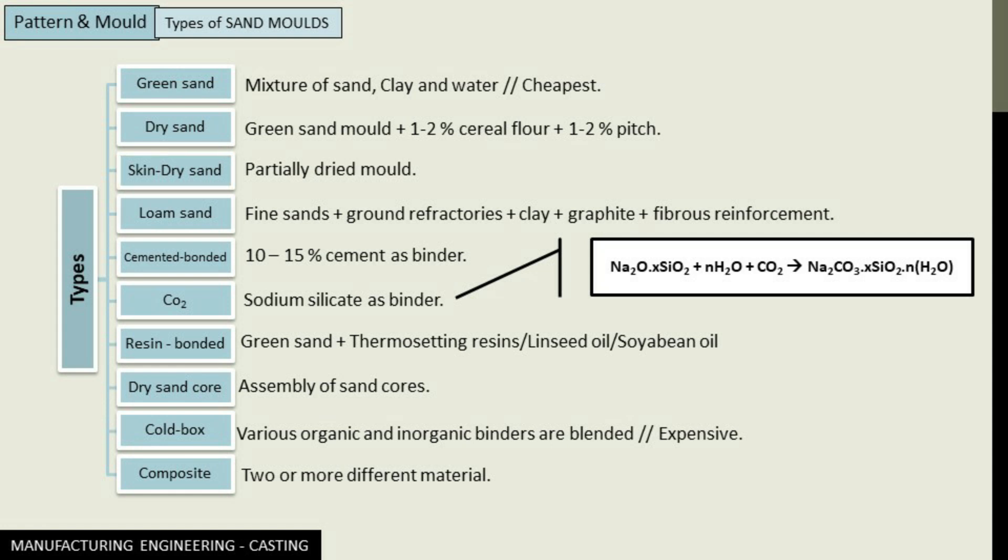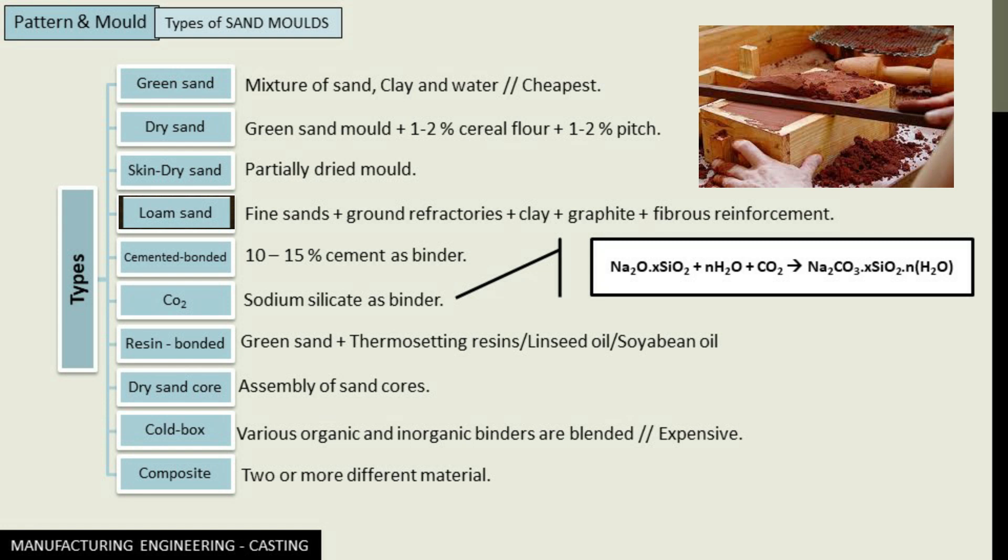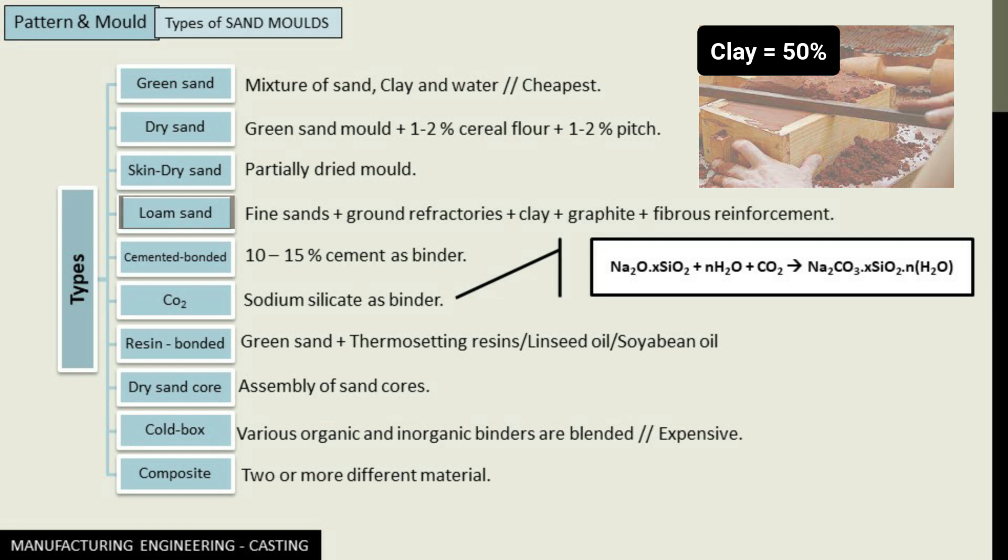Next is loam sand mold. Loam sand consists of fine sand plus finely ground refractories, clay, graphite, and fibrous reinforcements. The percentage of clay in this kind of sand mold is very high, it is of the order of even 50%.